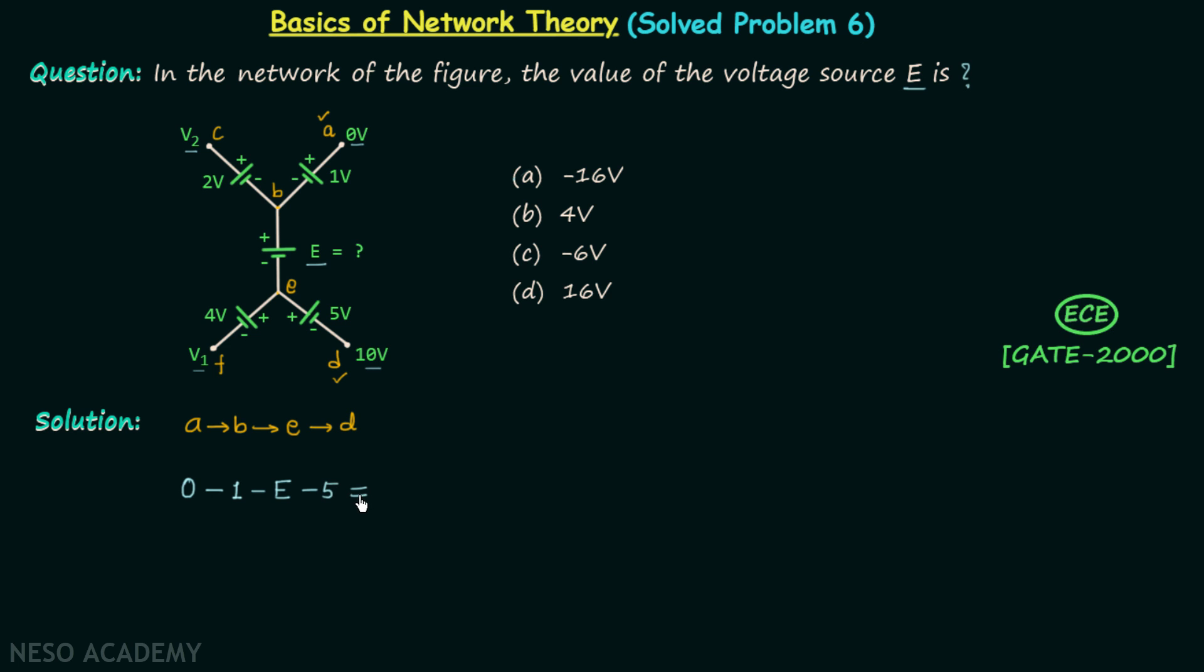And then finally we will equate with the potential at D, which is 10V. So this is our equation. When you simplify this, you will get voltage E is equal to minus 16V. So this is our answer, and option A is the correct option.